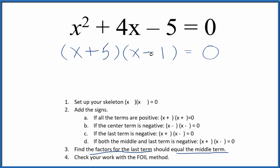x times negative 1, that's negative 1x, then I have 5 times x, that's 5x. So 5x and negative 1x, that's 4x. So we've correctly factored the equation, x squared plus 4x minus 5 equals 0.